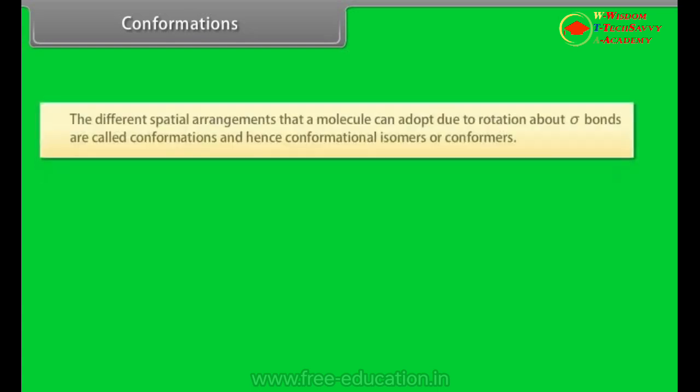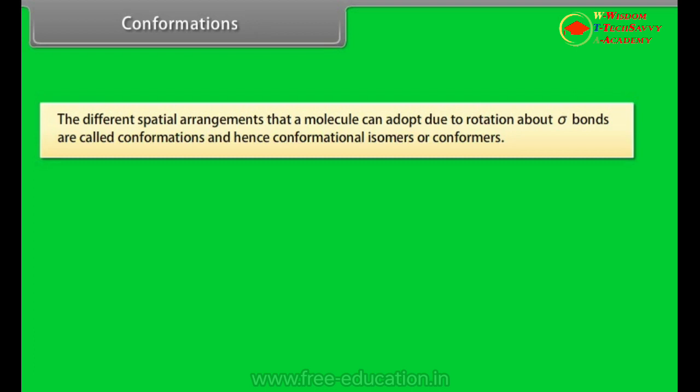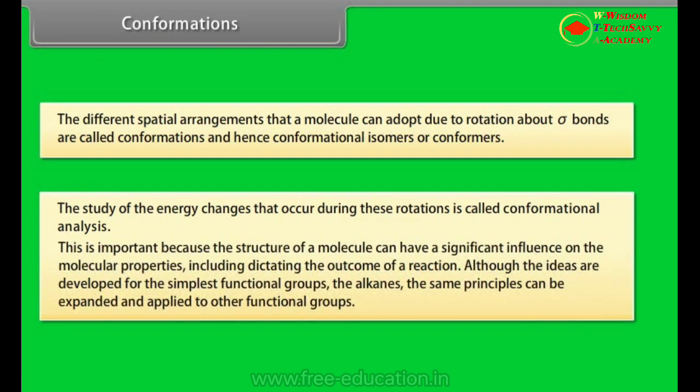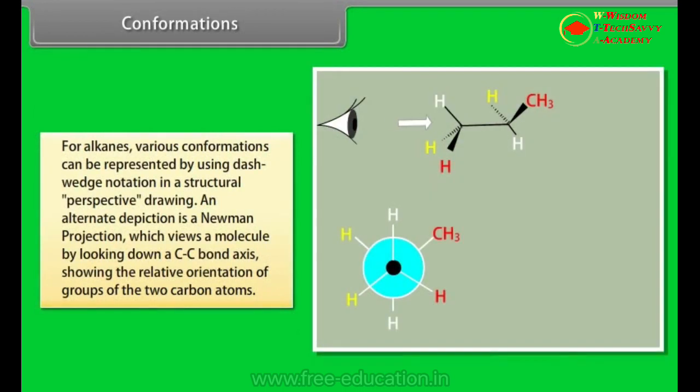Conformations. The different spatial arrangements that a molecule can adopt due to rotation about sigma bonds are called conformations and hence conformational isomers or conformers. The study of the energy changes that occur during these rotations is called conformational analysis. This is important because the structure of a molecule can have a significant influence on the molecular properties, including dictating the outcome of a reaction. Although the ideas are developed for the simplest functional groups, the alkanes, the same principle can be expanded and applied to other functional groups. For alkanes, various conformations can be represented by using dash-wedge notation in a structural perspective drawing. An alternate depiction is a Newman projection, which views a molecule by looking down a C-C bond axis, showing the relative orientation of groups of the two carbon atoms.